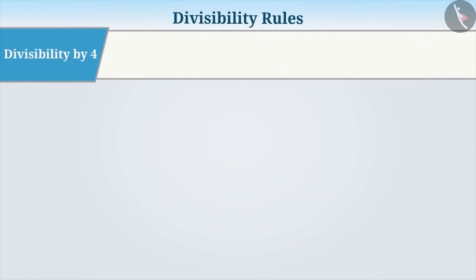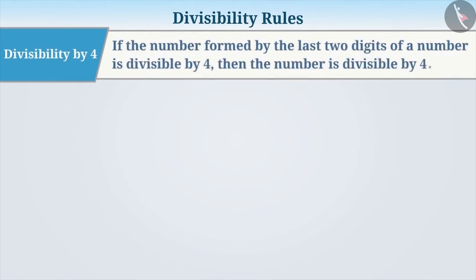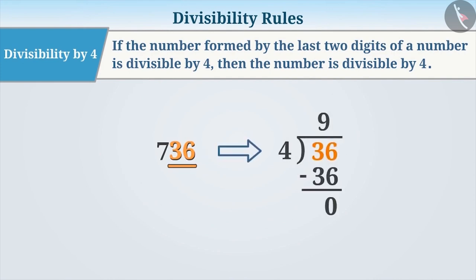Divisibility by 4: If the number formed by the last two digits of a number is divisible by 4, then the number is divisible by 4.